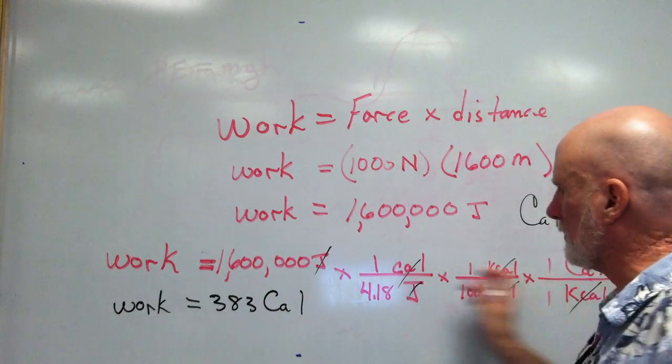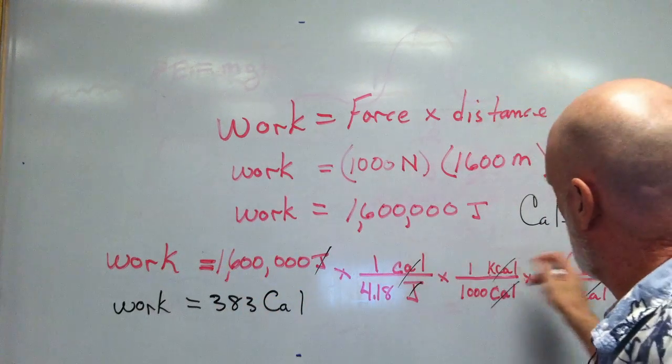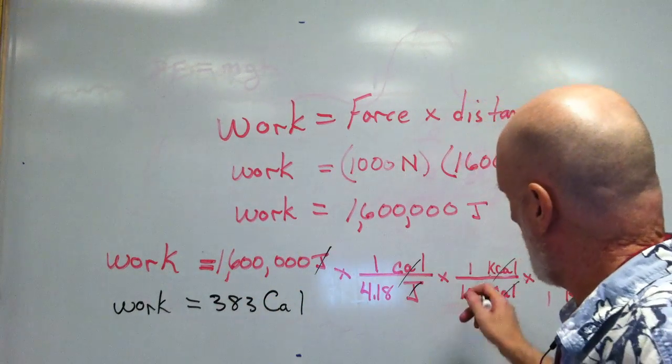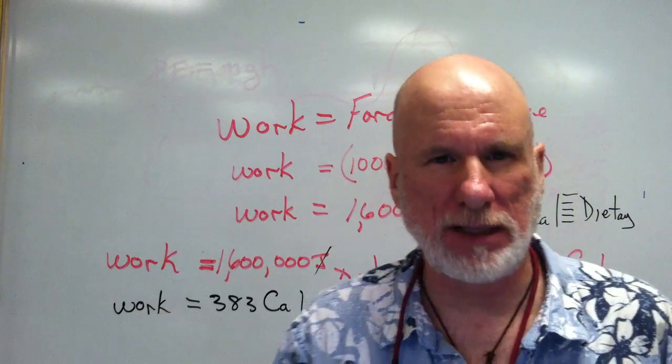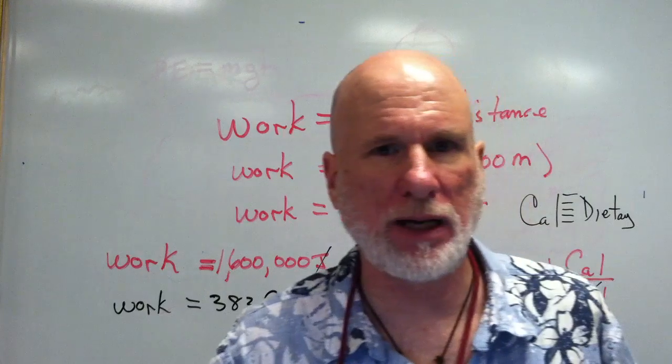So, multiply all that out. 1,600,000 divided by 4.18 divided by 1000 equals 383 calories.